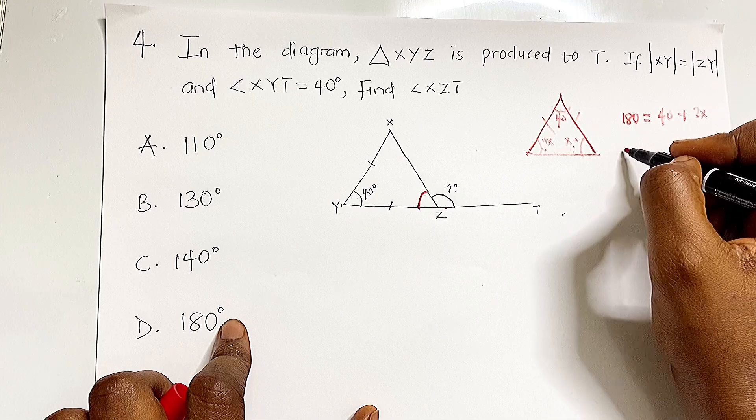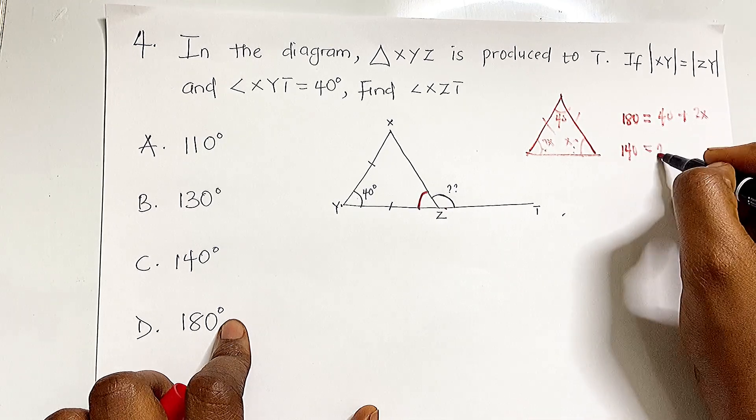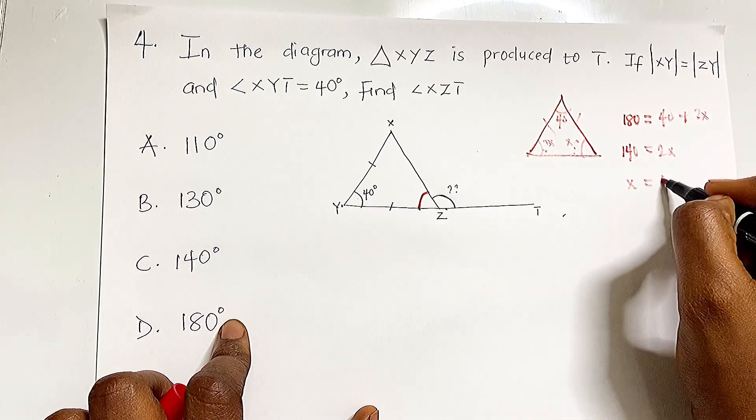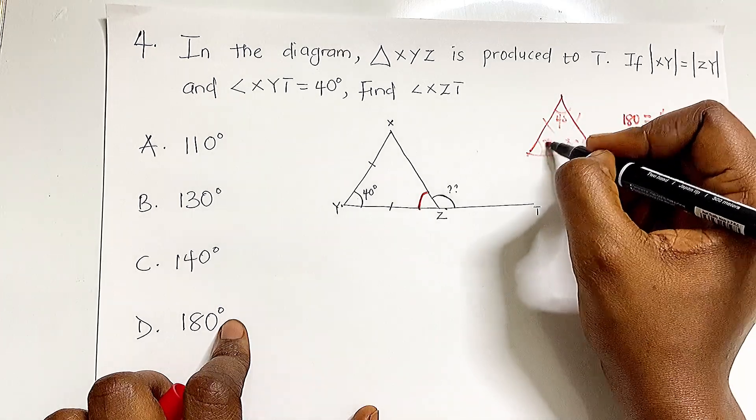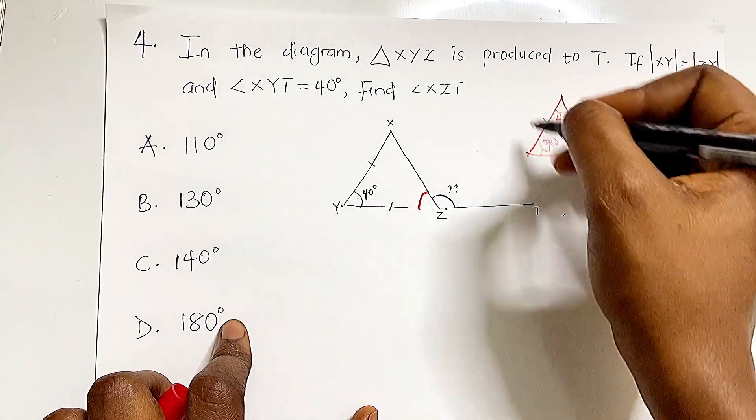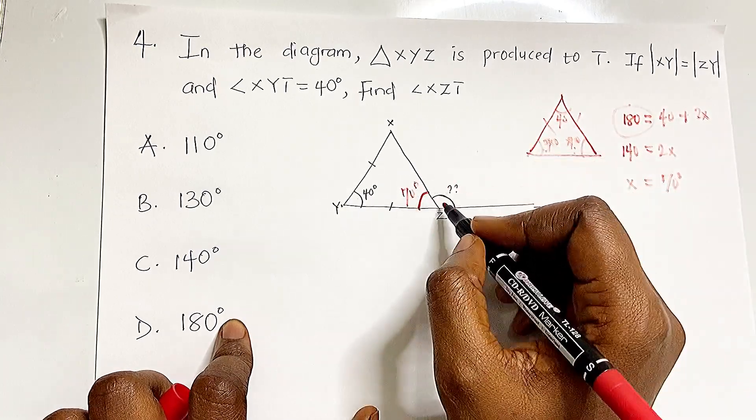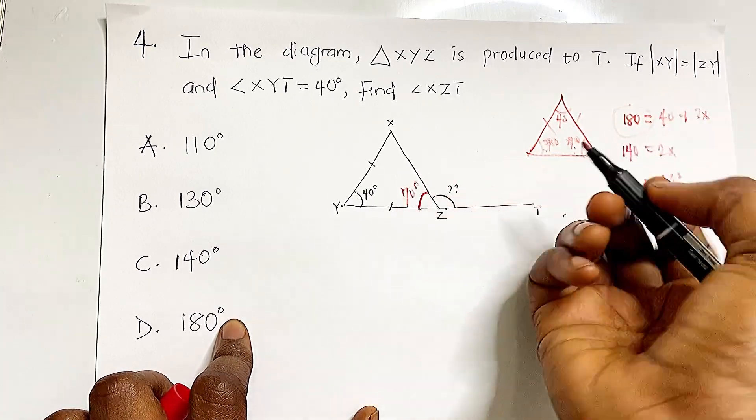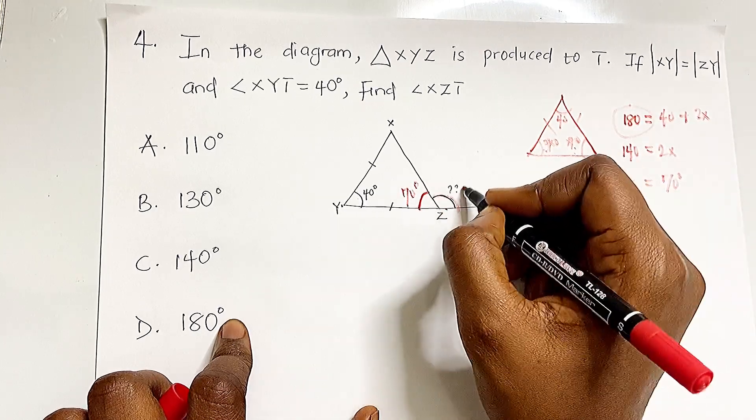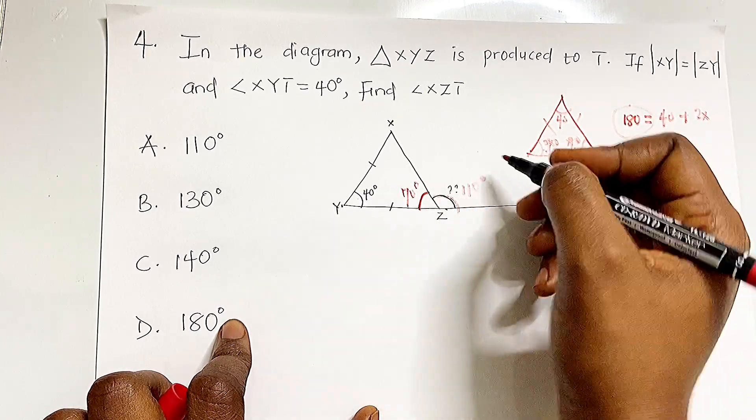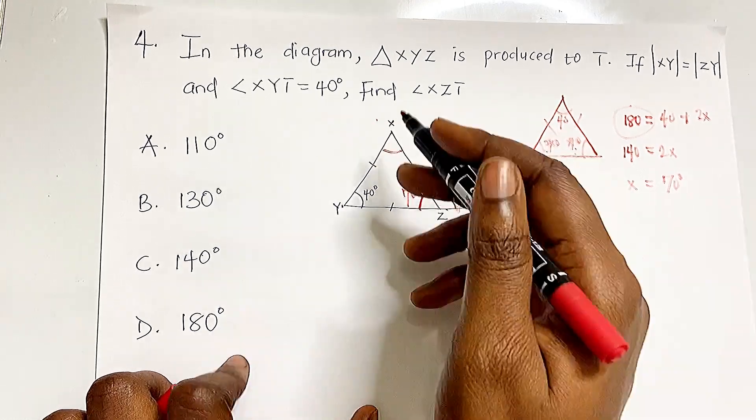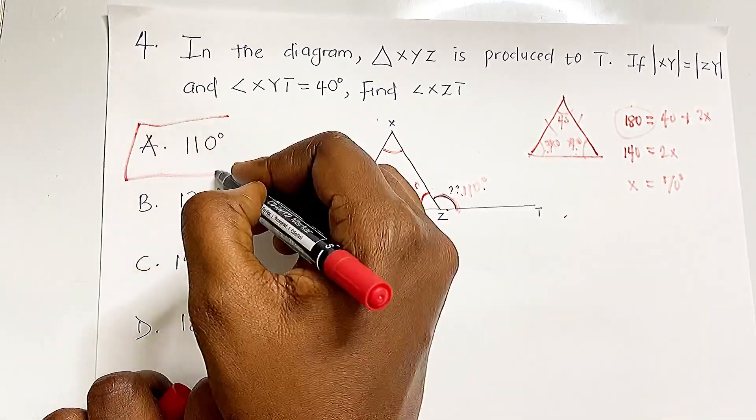Subtracting 40: 140 = 2X, so X = 70 degrees. Each base angle is 70 degrees. Since angles on a line sum to 180, we have 180 - 70 = 110 degrees for angle XZT. The answer is 110 degrees, option A.